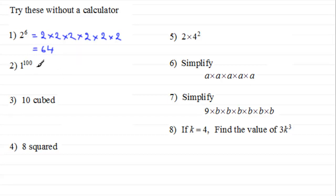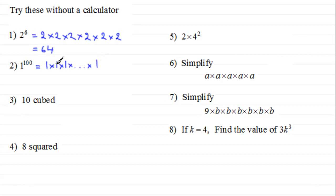Number two: one to the power hundred. That's one multiplied by itself a hundred times. One times one is one, times another one is still one — it's always going to be one. So one to the power hundred is one.